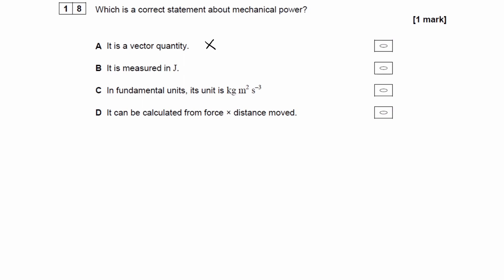So mechanical power is work done per unit time, or energy per second. Energy is not a vector. Although energy can be negative, it is not a vector.